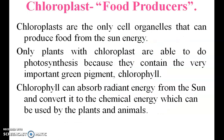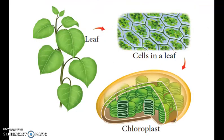Chloroplast — food producer: chloroplasts are the only cell organelles that can produce food from sun energy. Only plants with chloroplasts are able to do photosynthesis because they contain the very important green pigment chlorophyll. Chlorophyll can absorb radiant energy from the sun and convert it into chemical energy, which can be used by plants and animals.